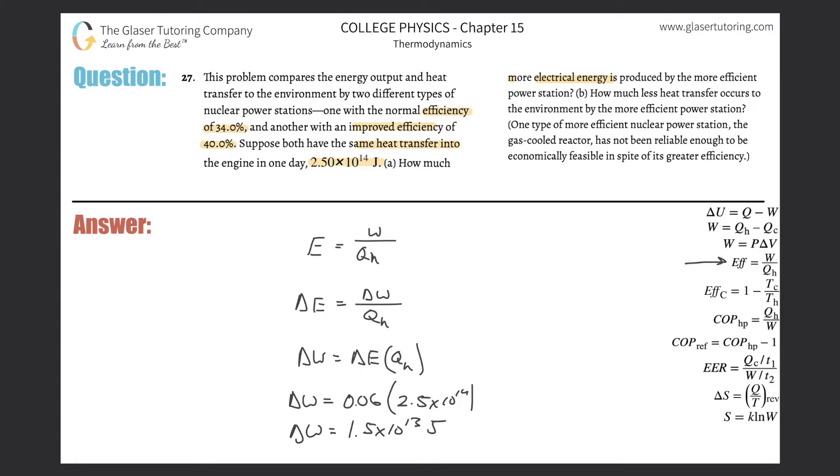That's basically 15 trillion joules. So just a little small change in efficiency, we get now 15 trillion more joules of output. So every little bit of efficiency helps in these power plants, as you can see.